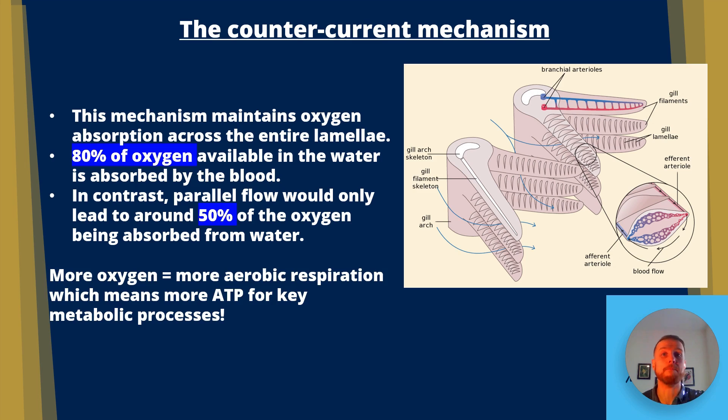More oxygen will mean more aerobic respiration, which means more ATP for key metabolic processes such as glycolysis, protein synthesis, cell division, active transport. Check out my video on active transport for more information on that. But you can see that it would give the fish a real survival advantage to have the countercurrent mechanism.